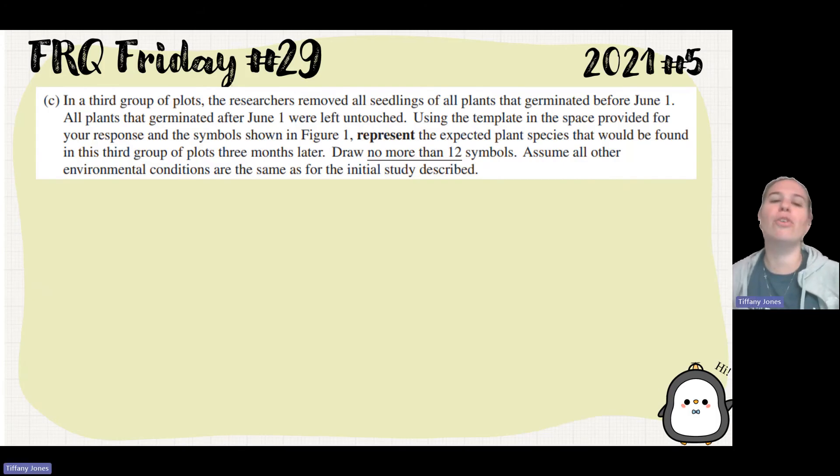In a third group of plots, the researchers removed all seedlings of all plants that germinated before June 1st. All plants that germinated after June 1st were left untouched. Using the template in the space provided and the symbols shown in Figure 1, represent the expected plant species that would be found in this third group of plots three months later. Draw no more than 12 symbols. Assume all environmental conditions are the same as for the initial study.